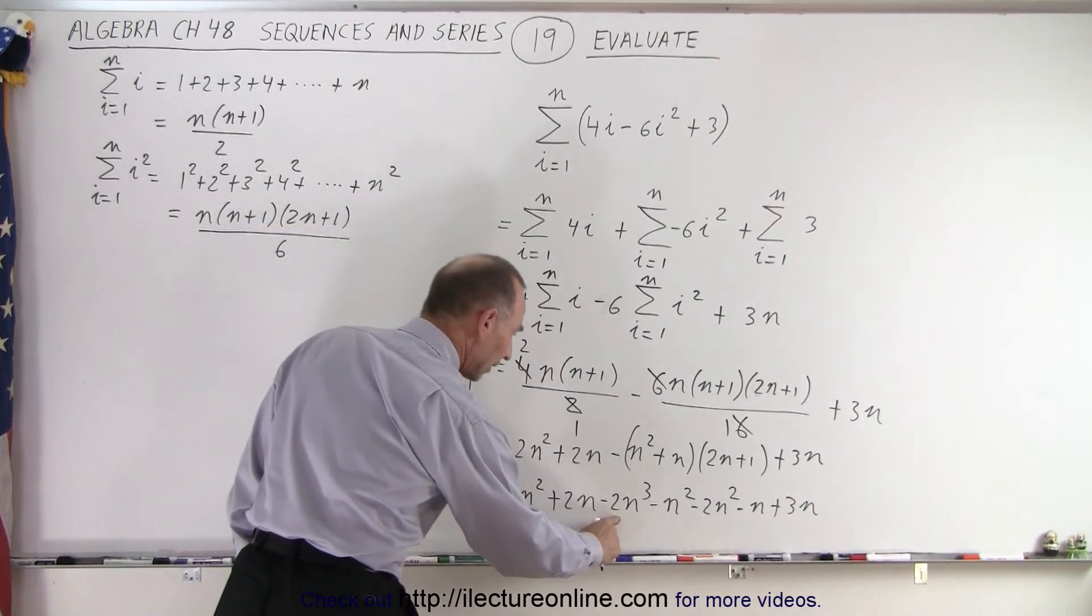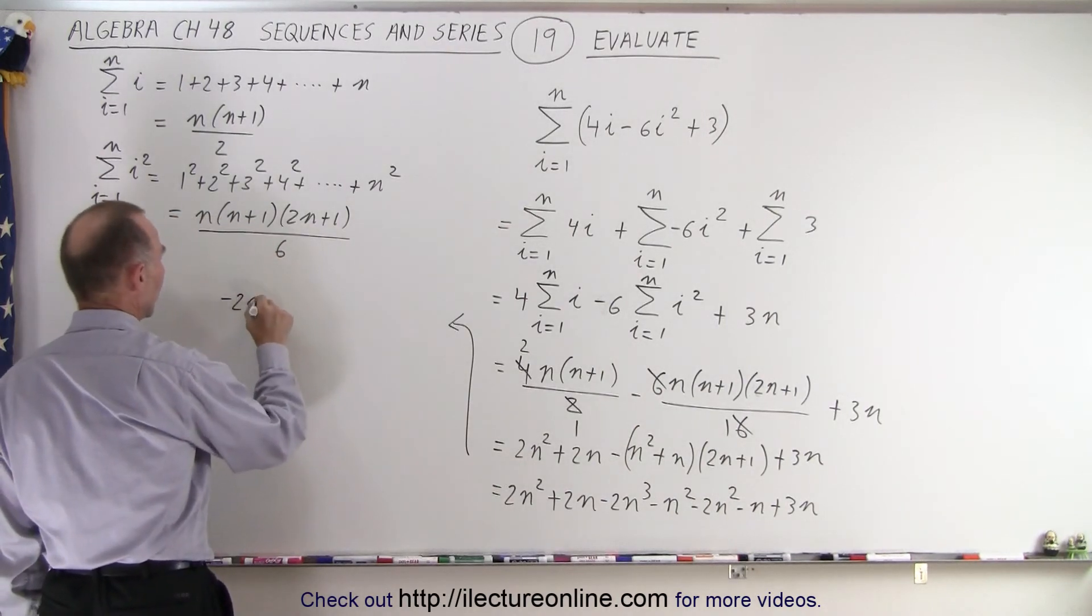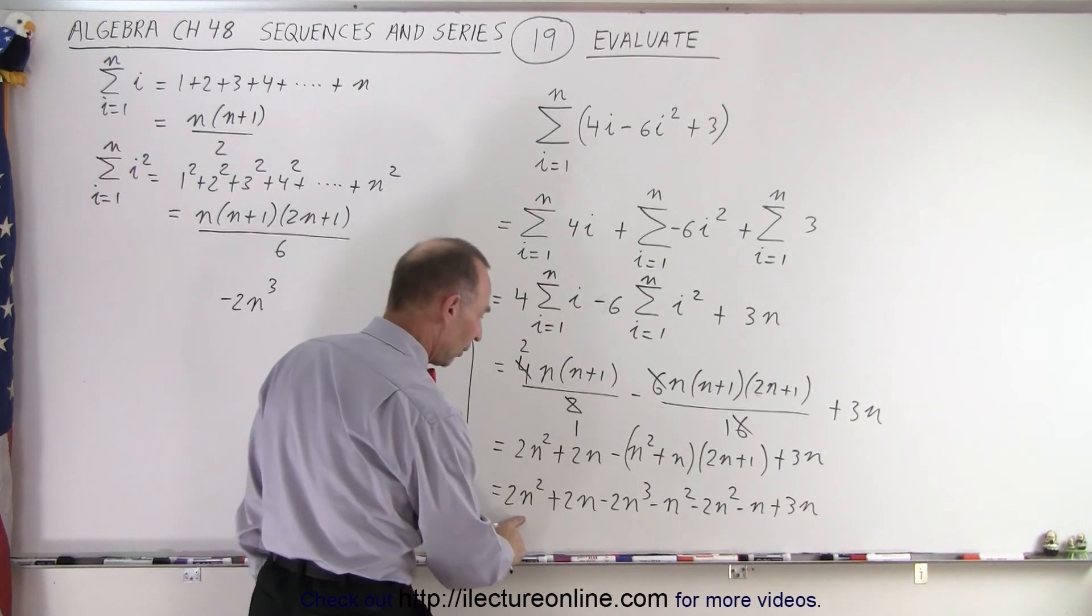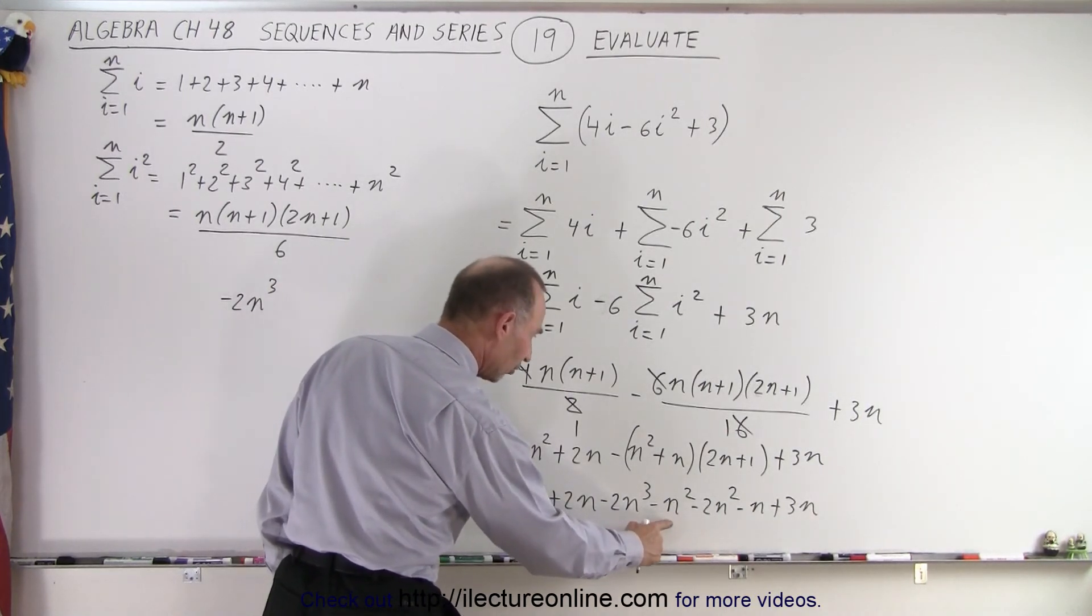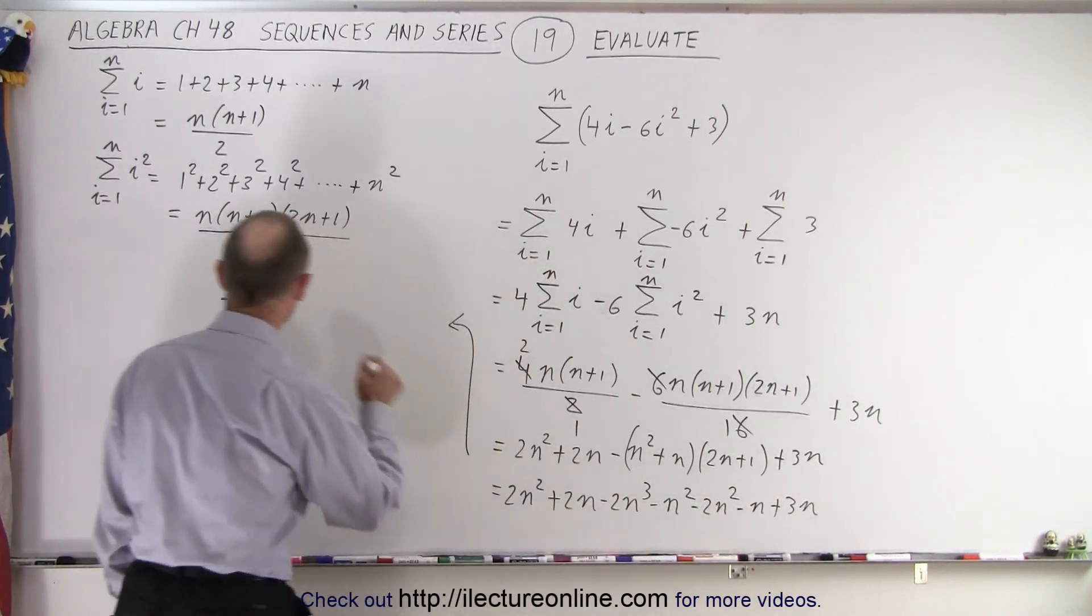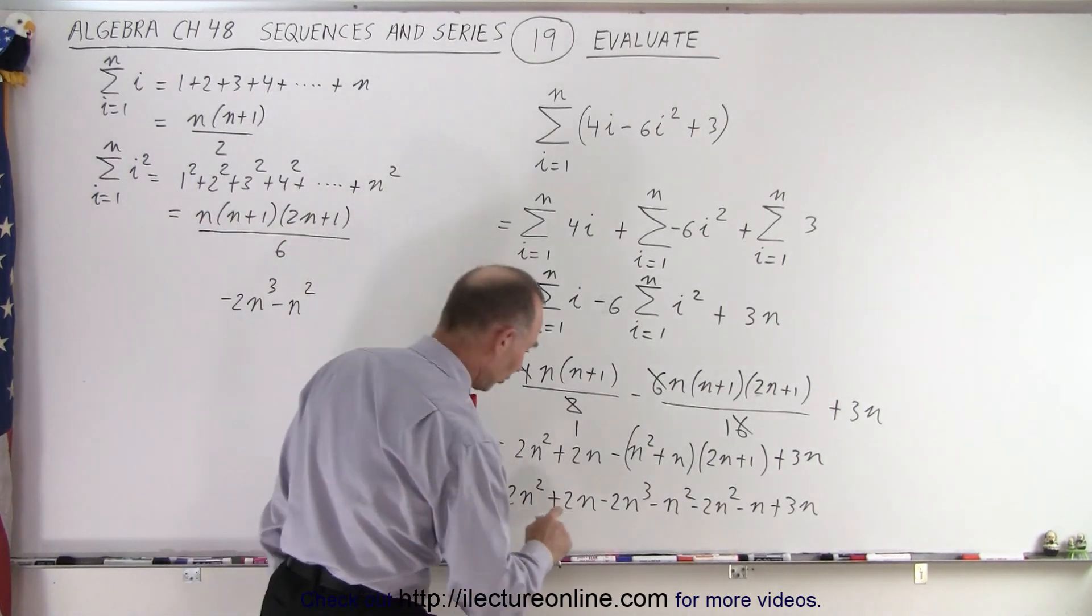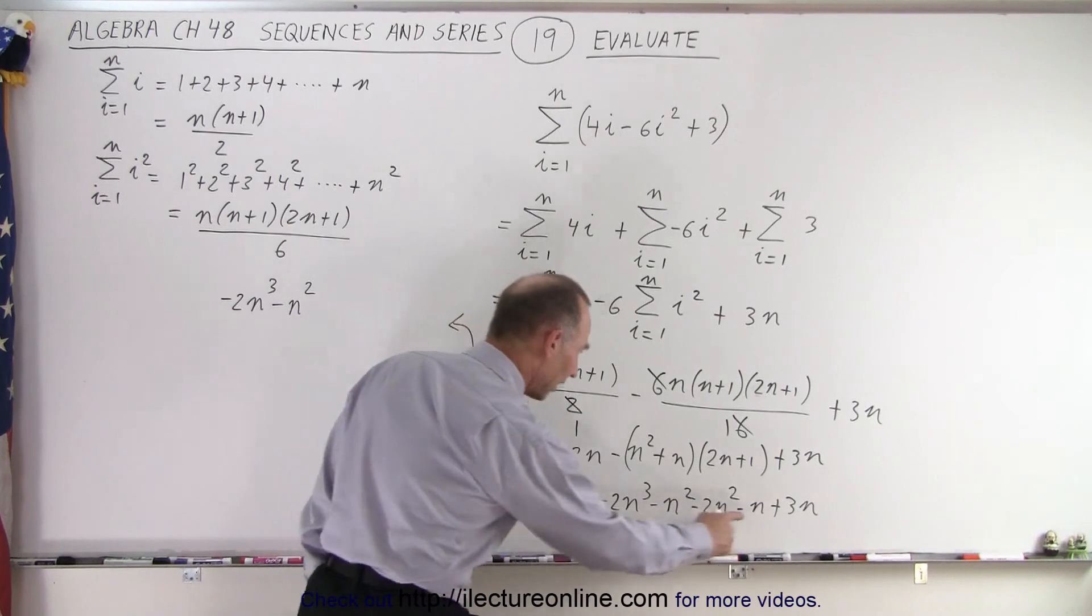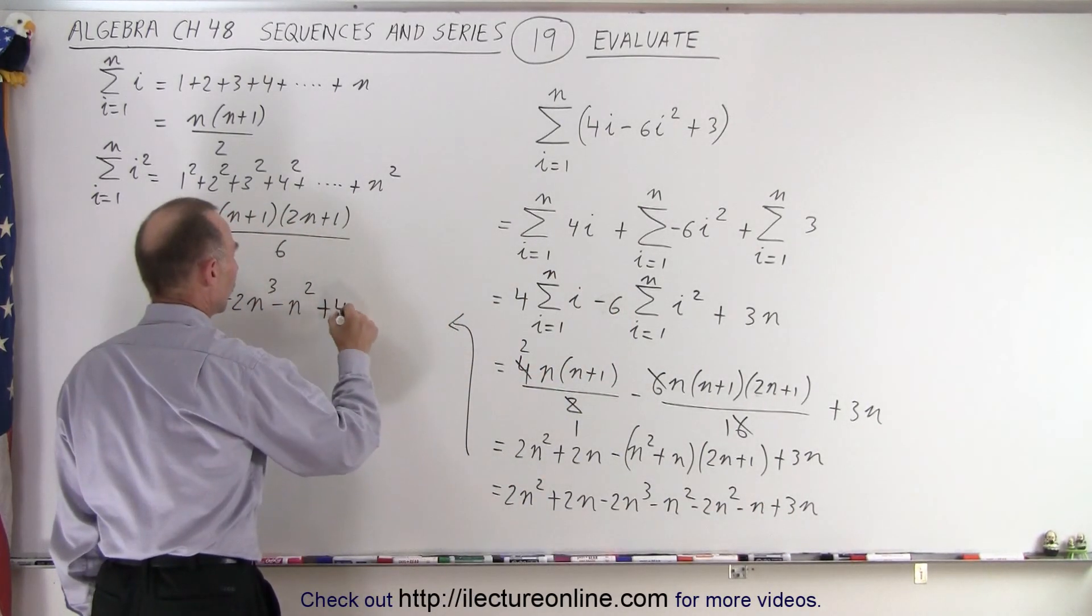So here we have a minus 2n cubed. That's the only cubed term. We have 2n squared minus n squared, that's 1n squared minus 2n squared, that would be minus n squared. So we have minus 3 plus 2, that would be a minus n squared. Now about the n terms: 2n minus n is n plus 3n is plus 4n.